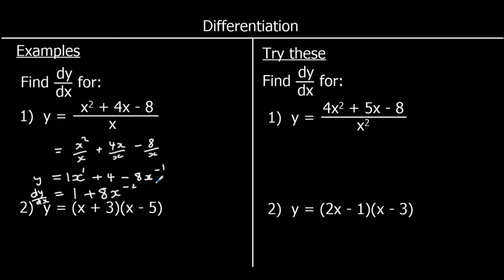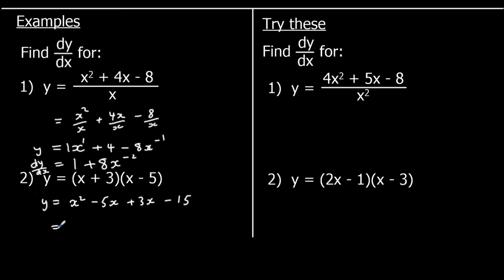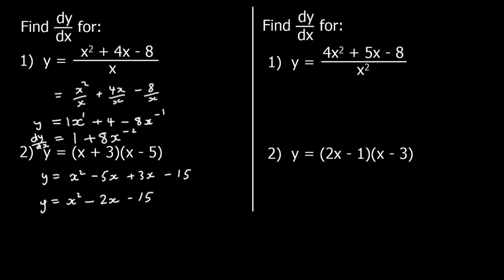The second example has brackets that we need to expand before we can differentiate. Expanding: x times x is x squared, x times negative 5 is negative 5x, 3 times x is 3x, and 3 times negative 5 is negative 15. Collecting like terms — negative 5 plus 3 is negative 2 — so we've got x squared minus 2x minus 15. Now we can differentiate: dy/dx — x squared becomes 2x, negative 2x is a straight line with gradient of negative 2, and negative 15 has no gradient so we can ignore it.